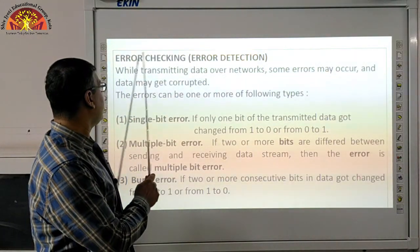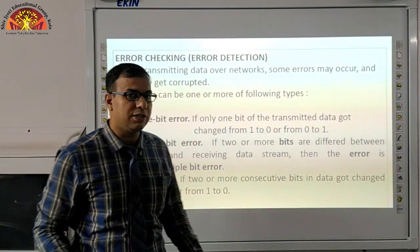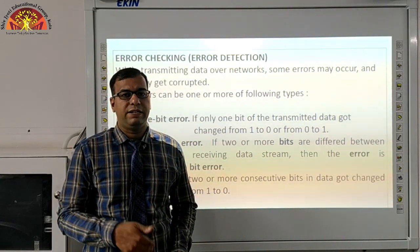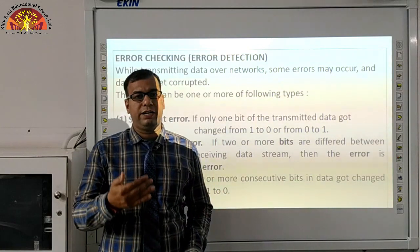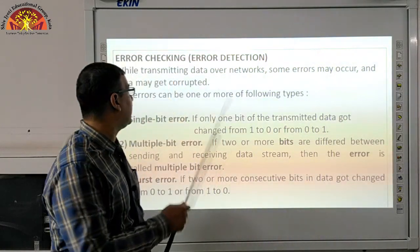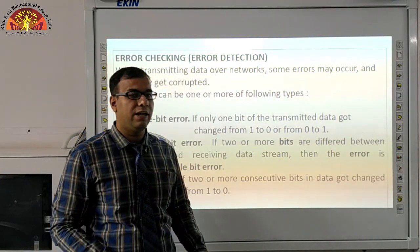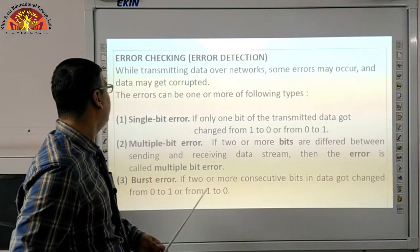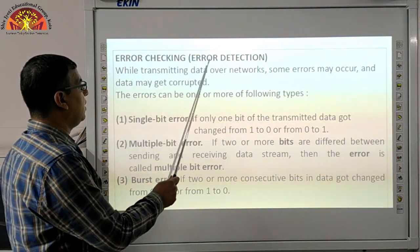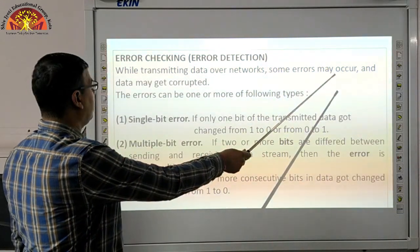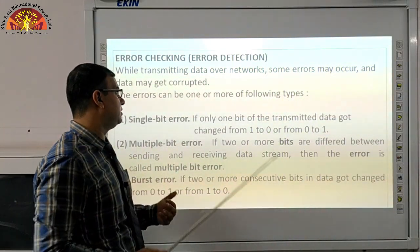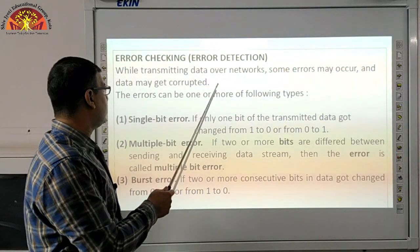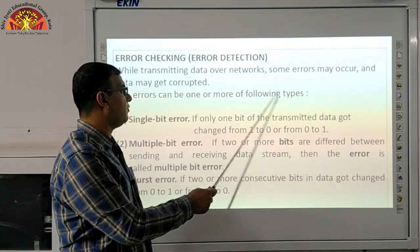Now next is error checking or error detection. Suppose you are using data communication to send data from one device to another — it is possible that in between your data gets lost. To detect that loss, there are techniques called error checking or error detection techniques. Whatever data there is, it travels in binary form — in 0101 format. While transmitting data over networks, some errors may occur and data may get corrupted.